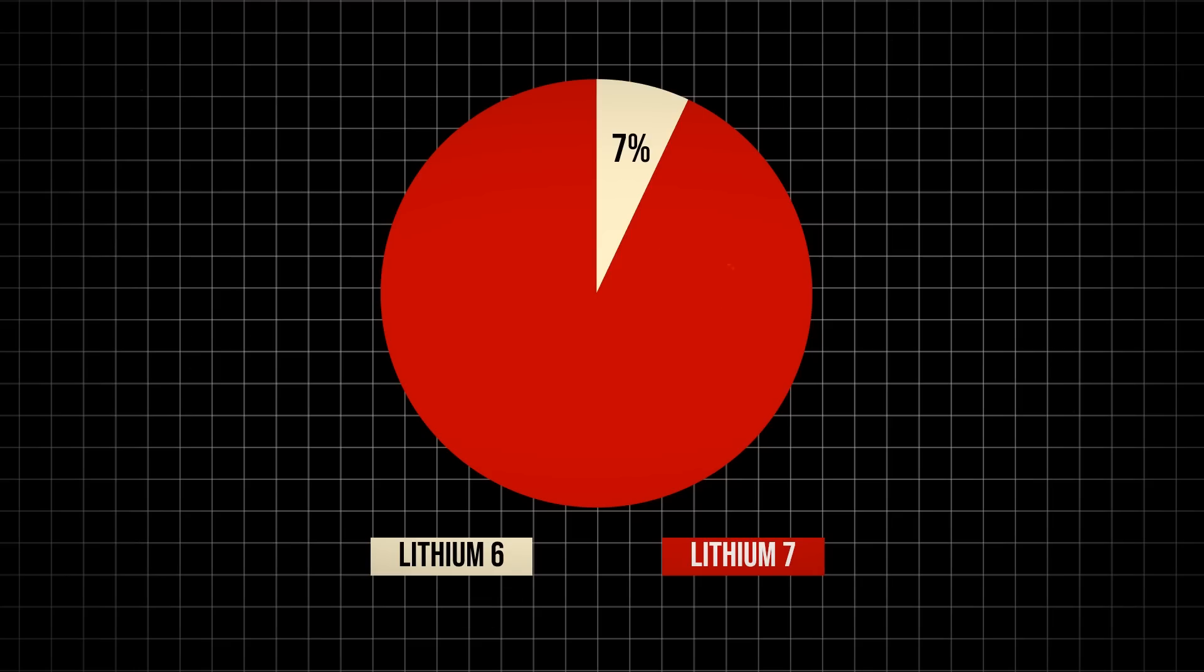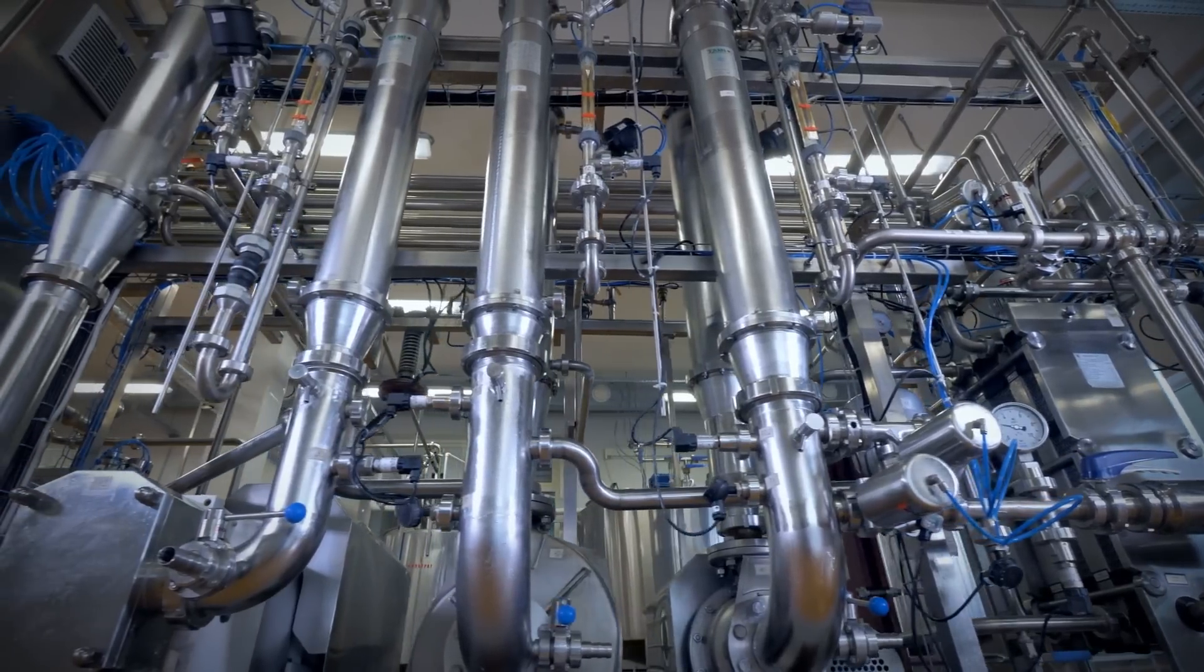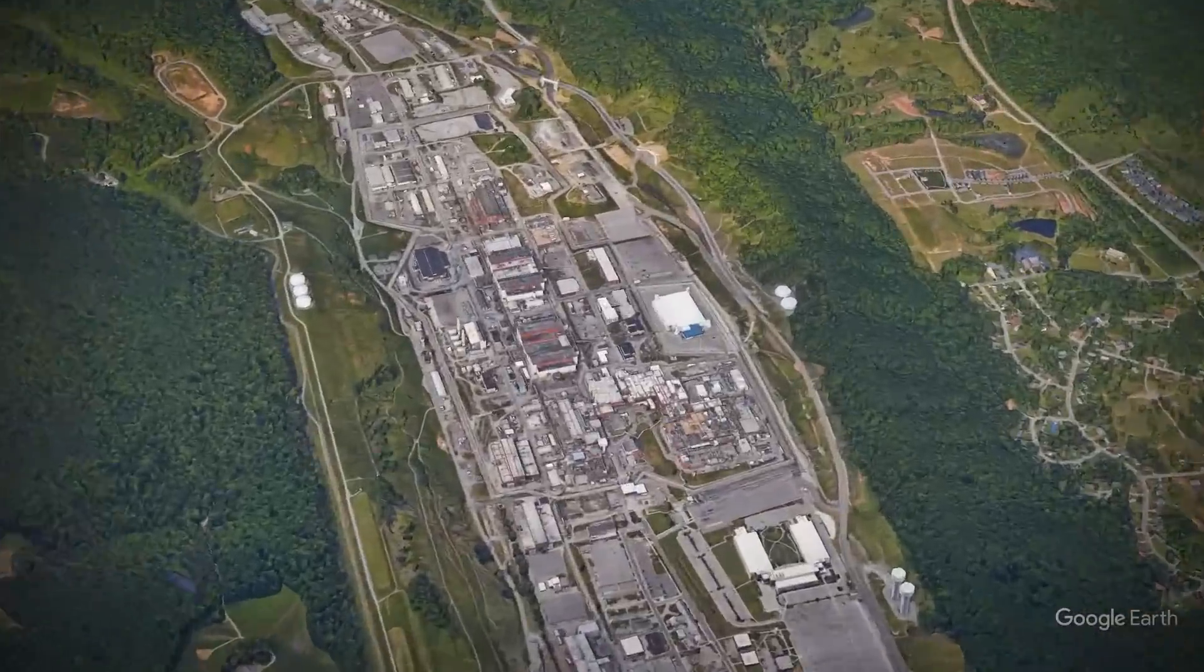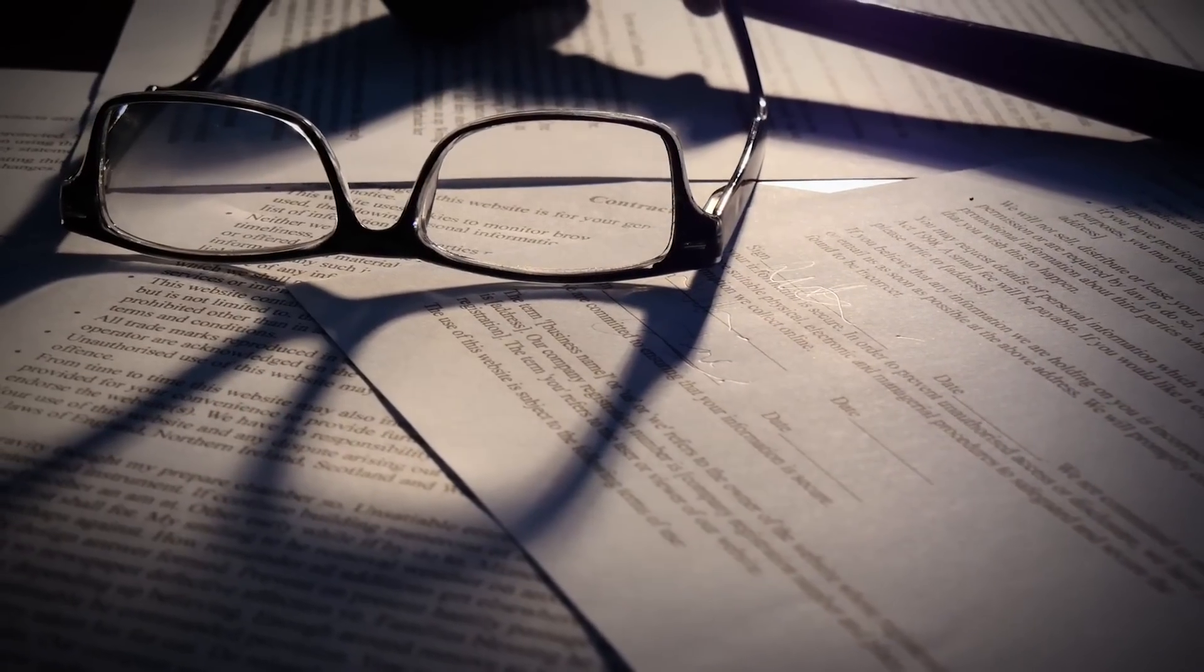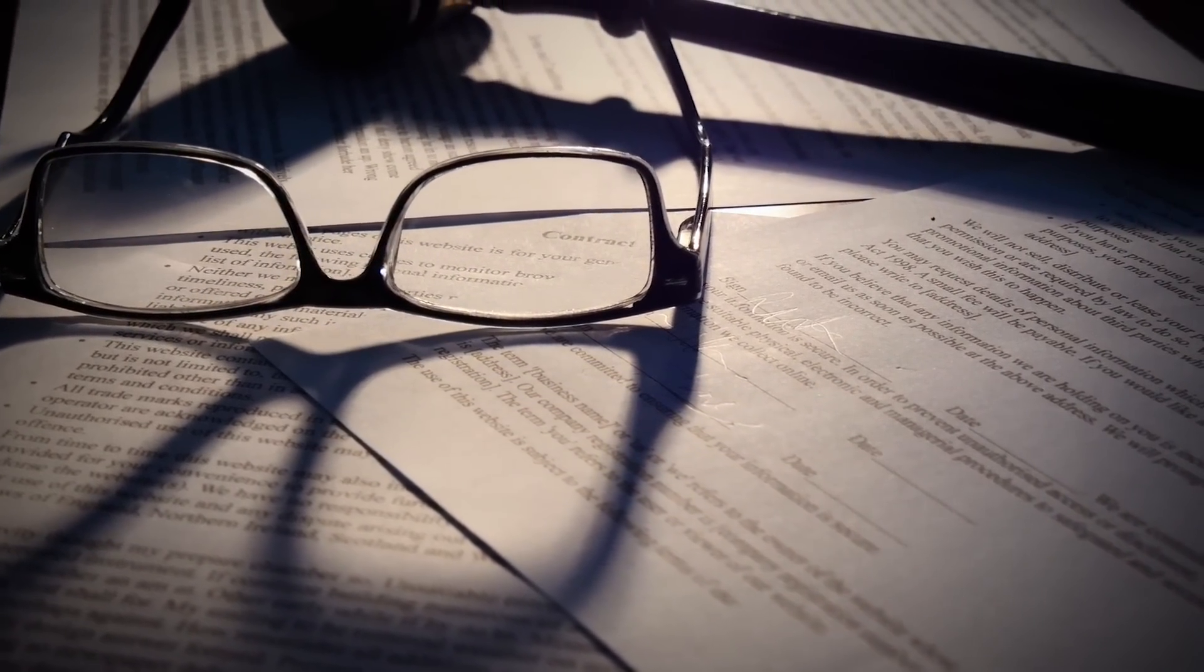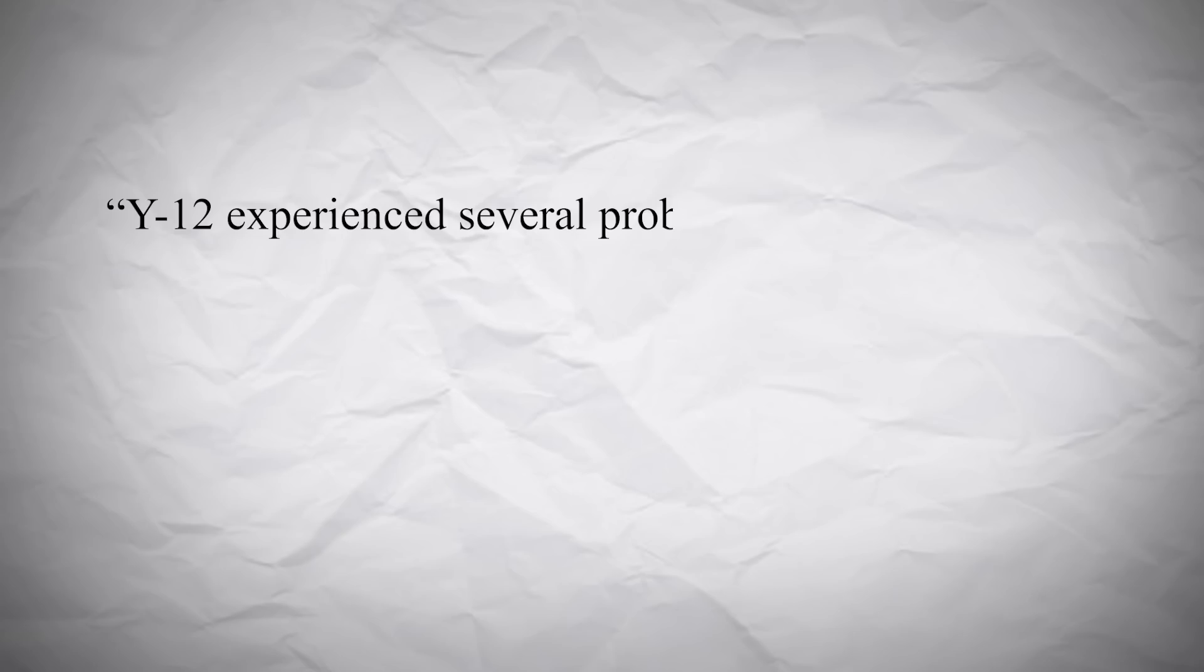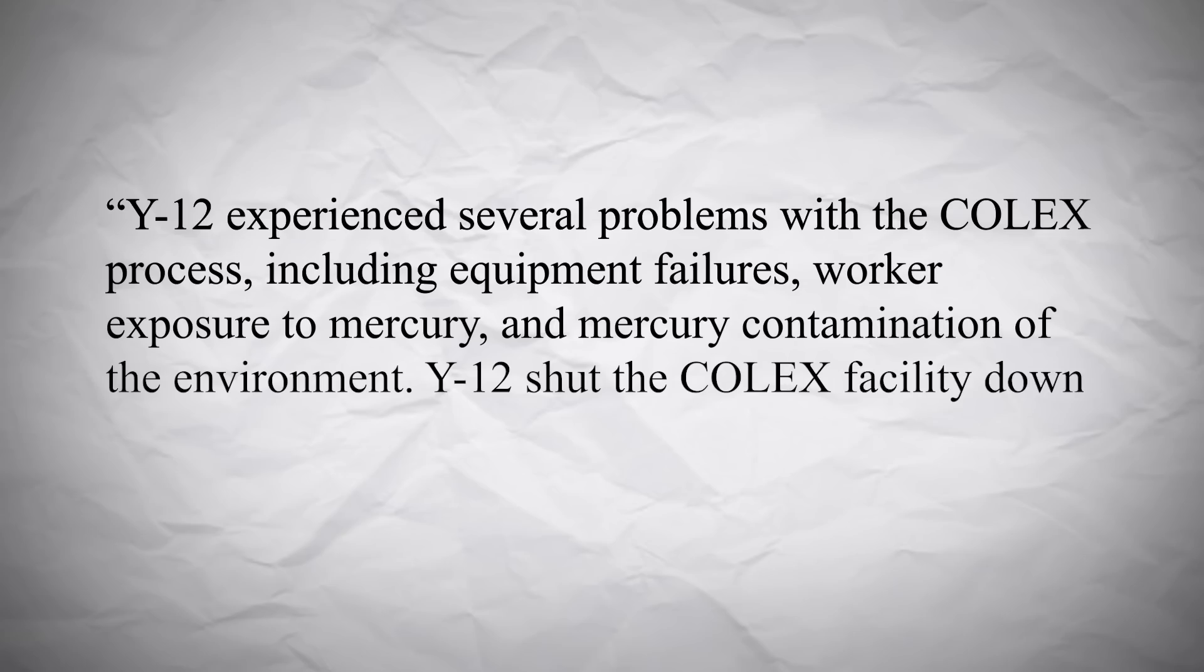Therefore, it must be enriched to bump it up to 90% lithium-6. This enrichment process was possible at a plant in the US, which operated at the Oak Ridge National Laboratory in its Y-12 National Security Complex. It used a column exchange process called the COLEX process. However, this was actually banned in the US in 1963, with a 2013 report stating Y-12 experienced several problems with the COLEX process, including equipment failures, worker exposure to mercury, and mercury contamination of the environment. Y-12 shut the COLEX facility down in 1963 and has not operated it since then.